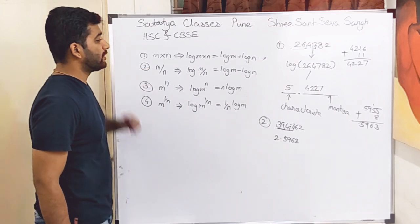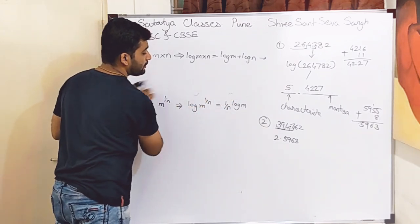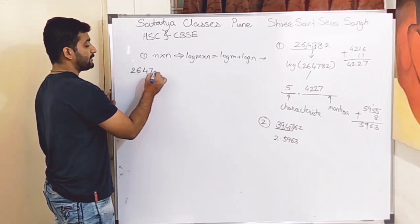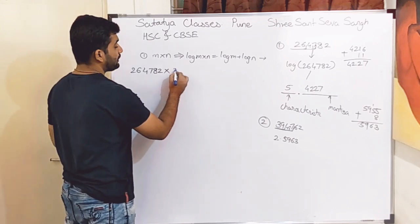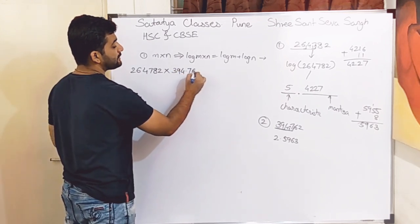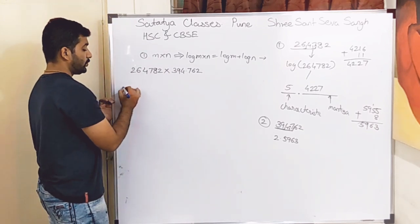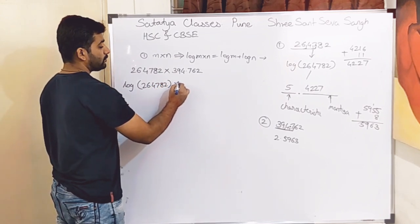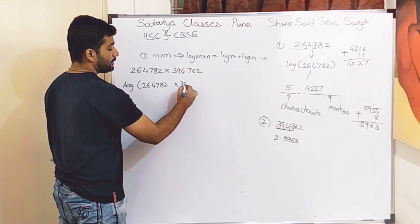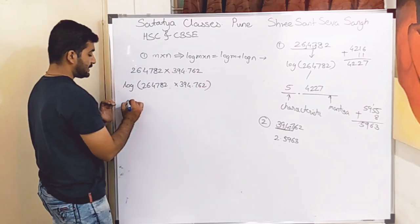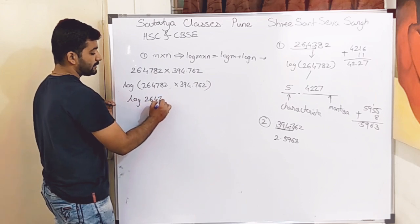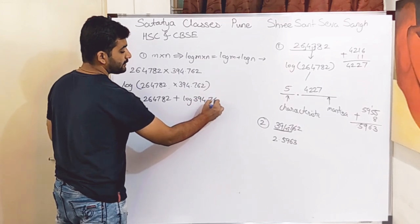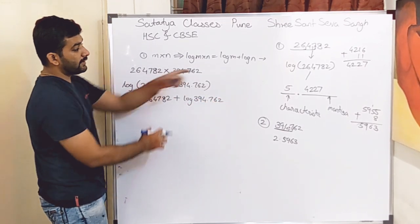Now we will use our first formula. We will take the same numbers and multiply them: 264782 × 394762. Using the first log rule, log of (264782 × 394762) = log 264782 + log 394762.